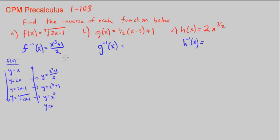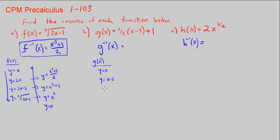Now let's go on to g(x) and find its inverse. How was g(x) wrapped? We start with y equals x, then we subtract 3 — remember, we handle the parentheses first — so y equals x minus 3. Then we multiply by one half, or divide by 2, and then we add 1. That's how we wrapped g.